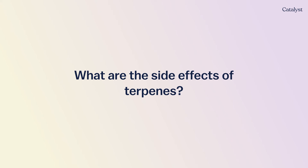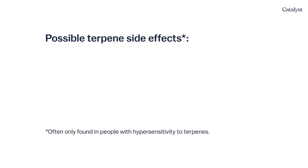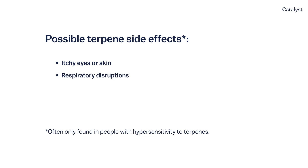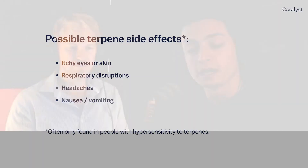Side effects from terpenes are uncommon simply because we don't come into contact with them in concentrations high enough to trigger them, especially when using them within the plant. If you've consumed enough to experience a side effect from terpenes, you've likely also reached a point of significant THC overconsumption. Individuals with hypersensitivities might experience itchy eyes or skin, respiratory disruptions, headaches, or in extreme cases nausea or vomiting.